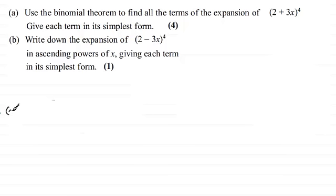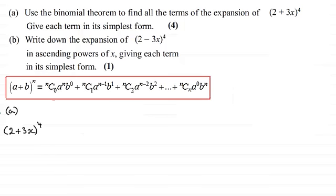So for part a then, we've got to expand 2 plus 3x all to the power 4 using the binomial expansion. And I'm assuming you're familiar with the binomial expansion here. If not, you can always check this out on my website. So when I compare a plus b to the power n with 2 plus 3x to the power 4, I can see that a is 2, b is 3x, and n is 4.